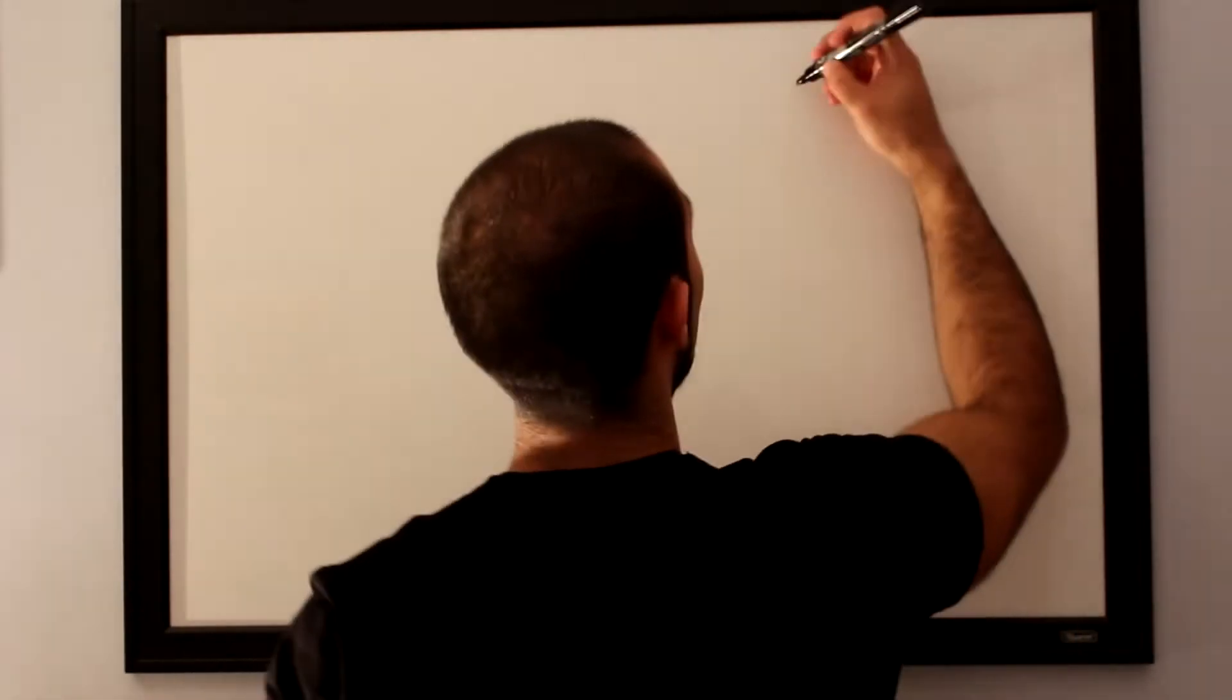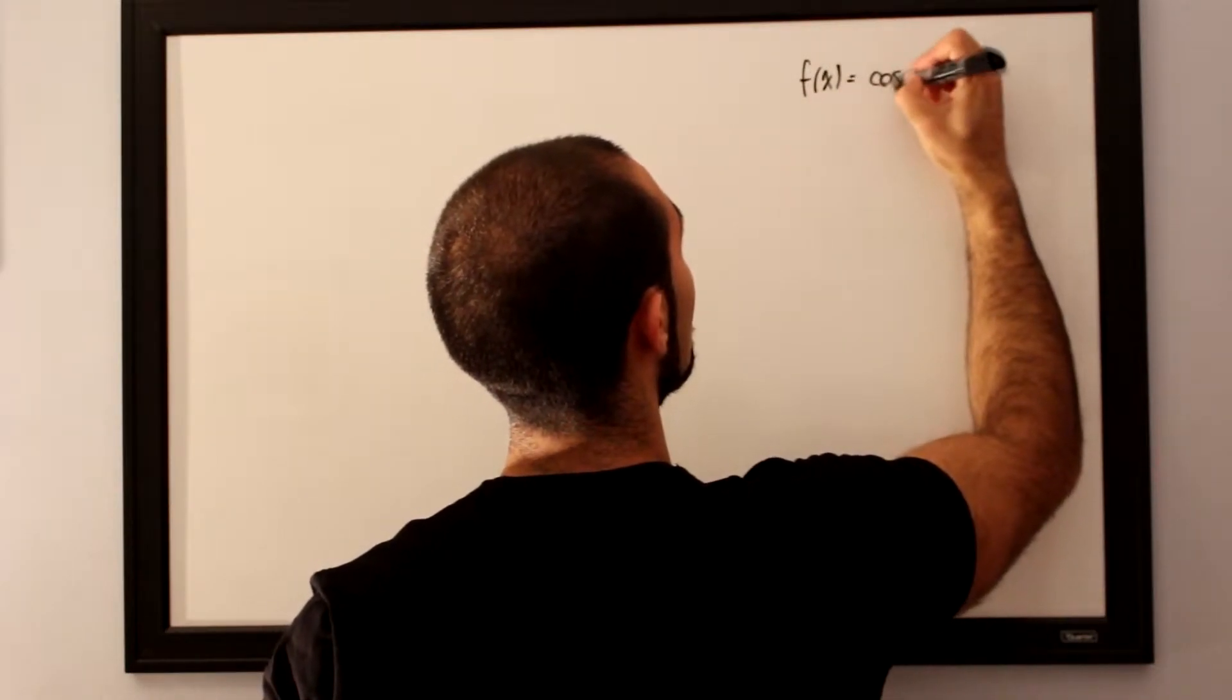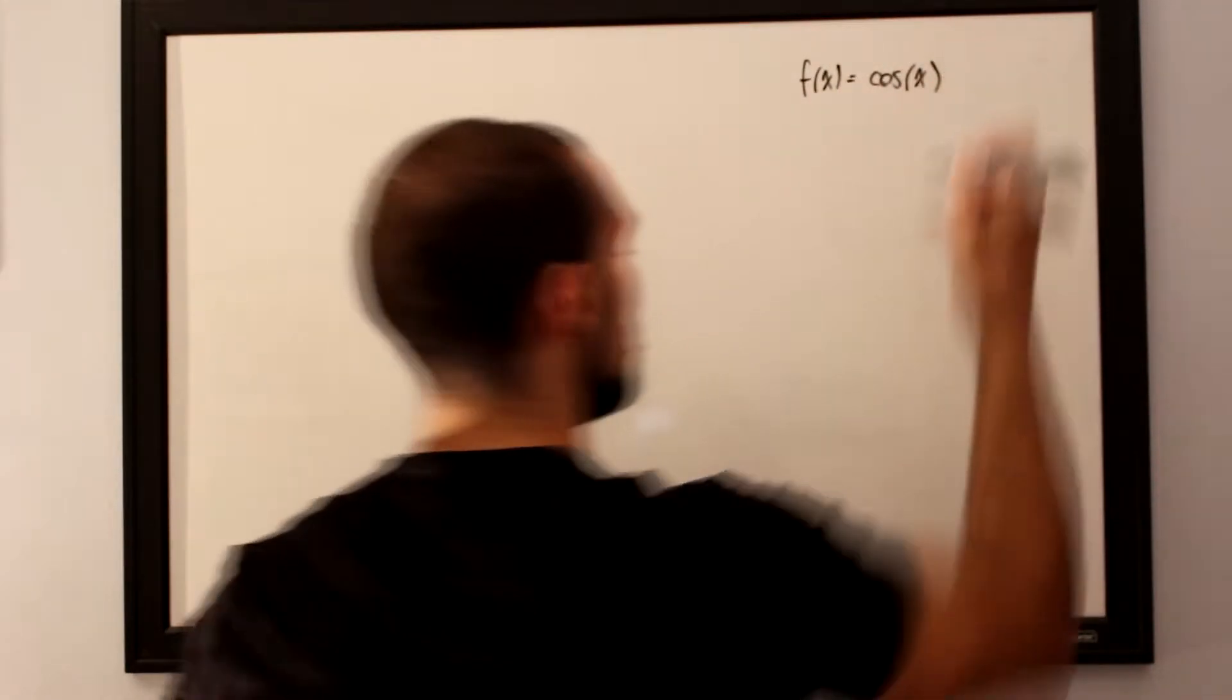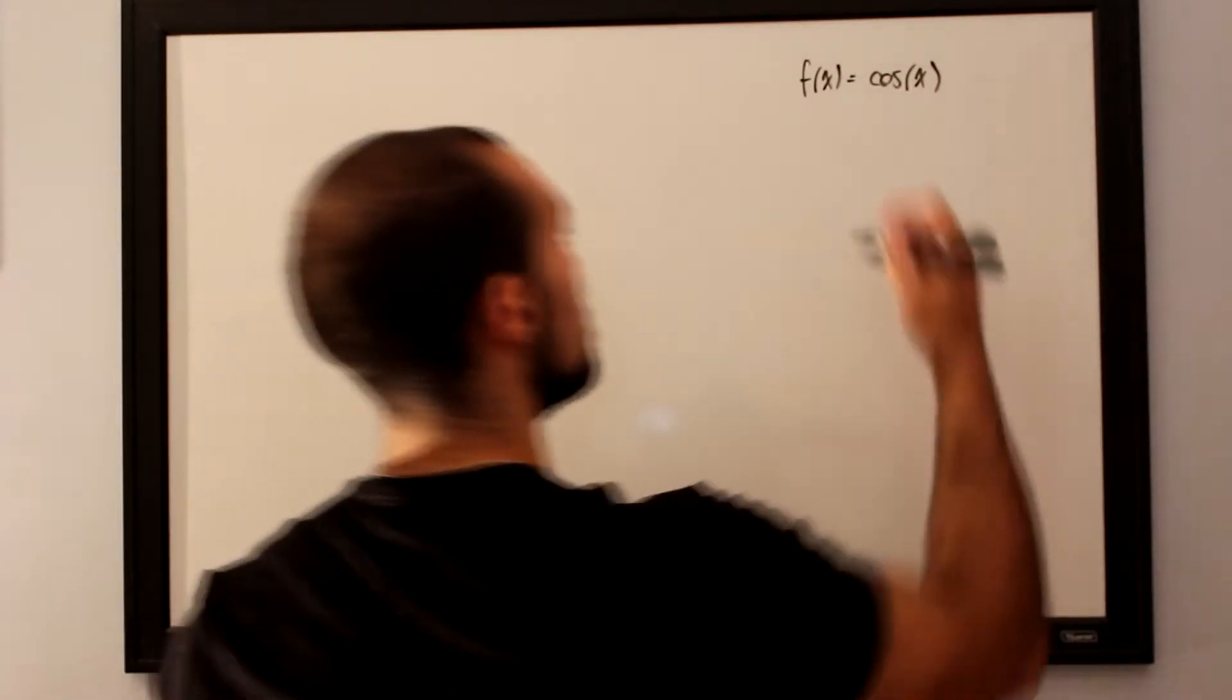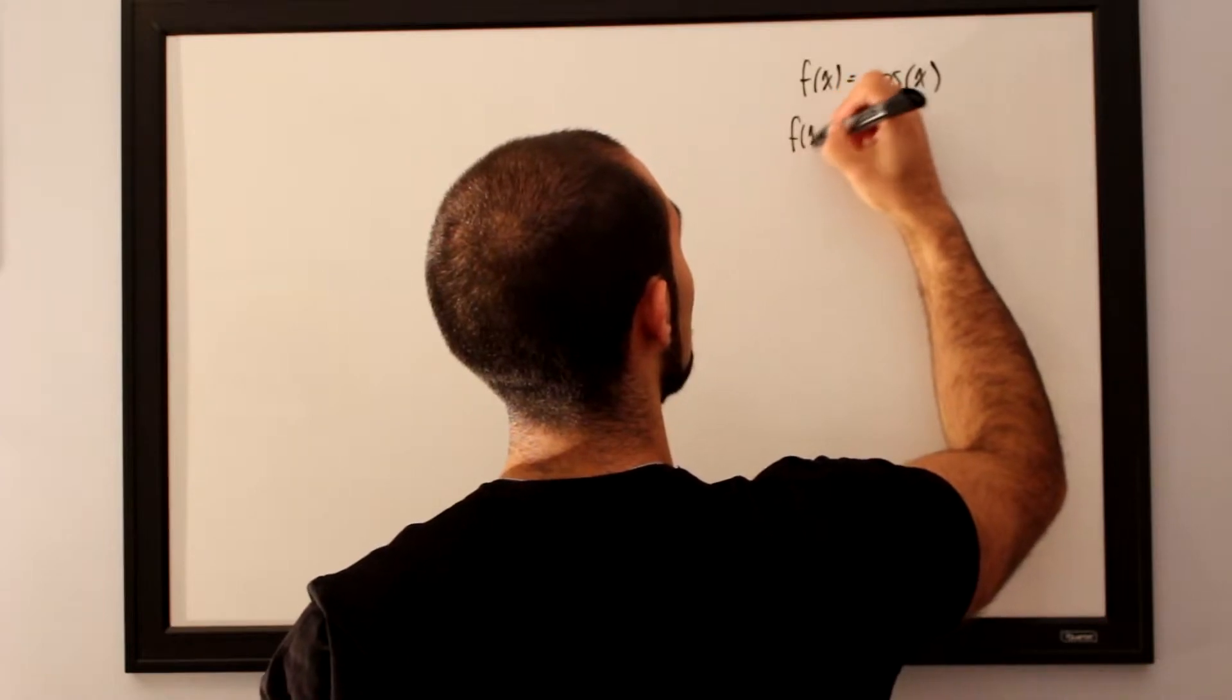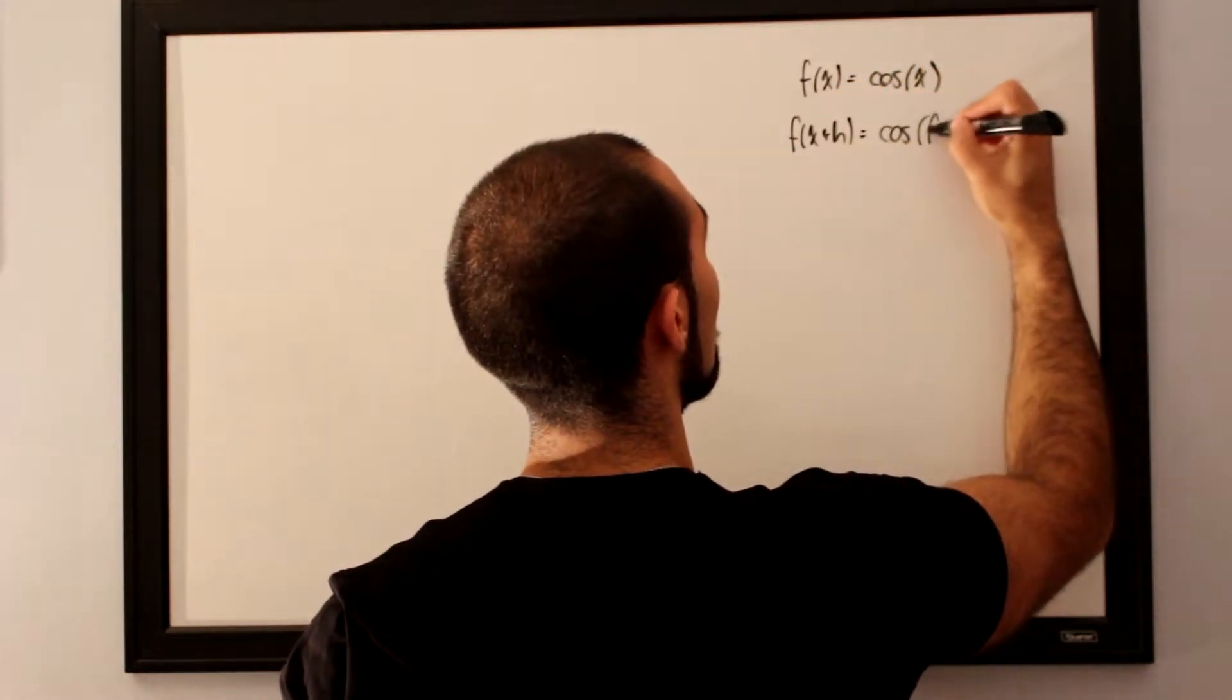Next up, we want to take the derivative of cosine of x, so f of x will be cosine of x. We want to determine what our f of x plus h is, so we want f of x plus h is equal to cosine of f of x.